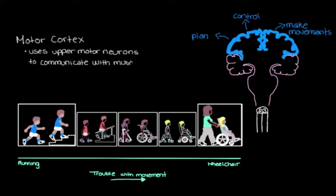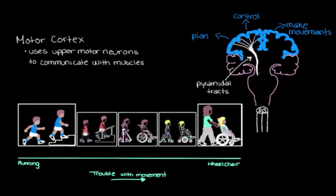These upper motor neurons head off from different parts of the motor cortex and come together with neighboring upper motor neurons to form highways called the pyramidal tracts — pyramidal because the neurons go through structures called the medullary pyramids in order to reach their destinations in the brain stem or the spinal cord. A tract just means a bundle of axons, so these are the axons of the upper motor neurons. These highways are what the motor cortex uses to control our muscles.